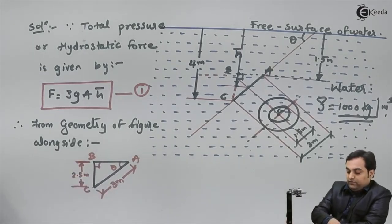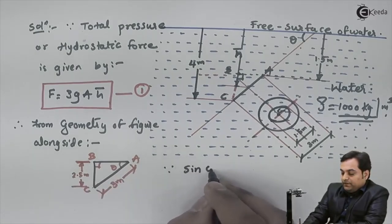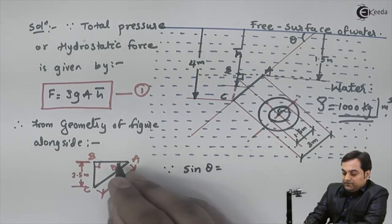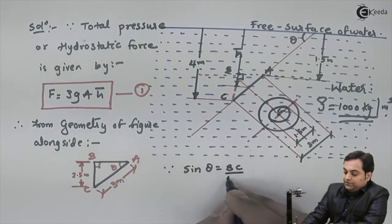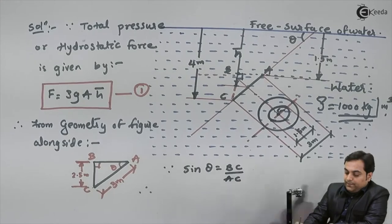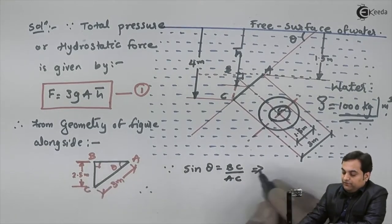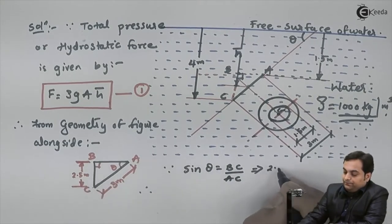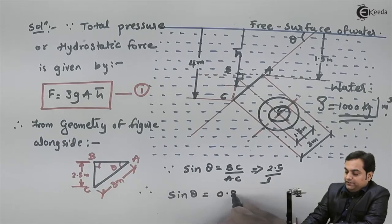From this geometry, since sin θ = opposite/hypotenuse = BC/AC, we get sin θ = 2.5/3, therefore sin θ equals 0.833.